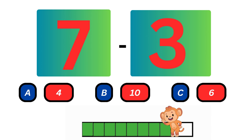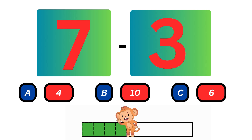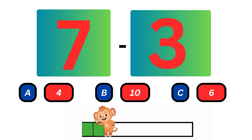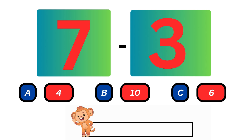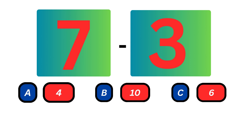What do you get when you subtract 3 from 7? The answer is 4. When you subtract 3 from 7, you will get 4.